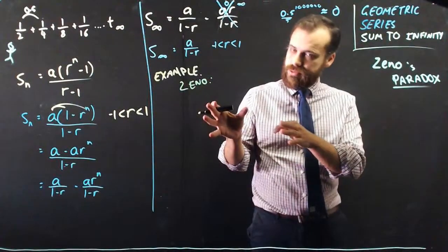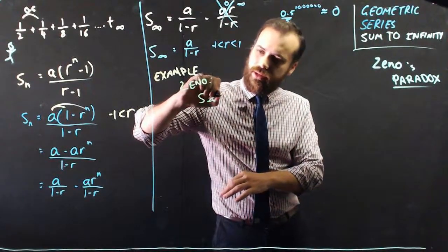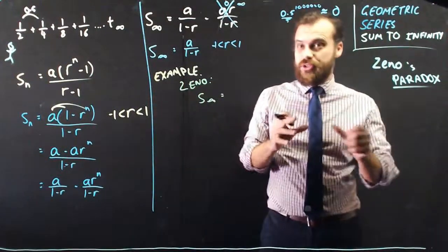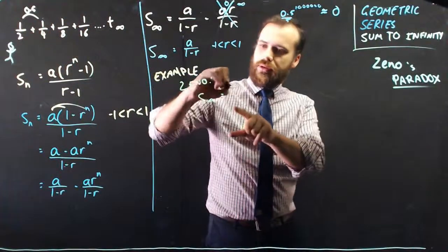So, now if I use Zeno as my example, the sum to infinity is going to be equal to the first term, and the first term was half of the room, half.